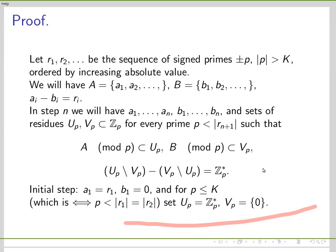In the first step we take r_1, the first prime to be represented; we put it into a, we put zero into b. And for the first primes up to k — since r will represent primes bigger than k, so the assumption that p is less than the next r is exactly the same as p being at most k — we put every non-zero residue into u_p and only zero into v_p.